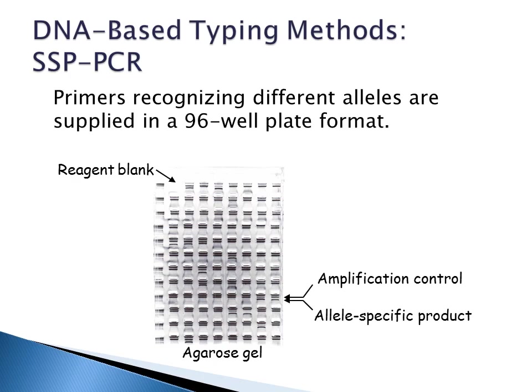You can also do SSP PCR using gel electrophoresis, where you have primers recognizing different alleles, and this is done in a 96-well plate format. You would have an agarose gel, an amplification control, and a reagent blank, which is your contamination control.